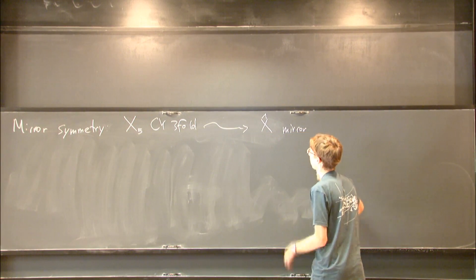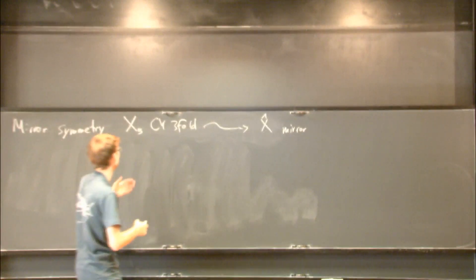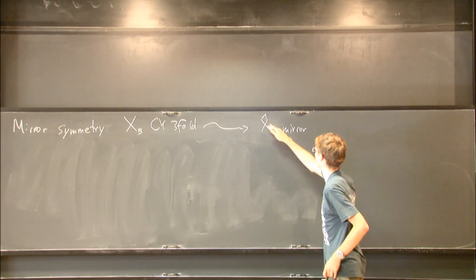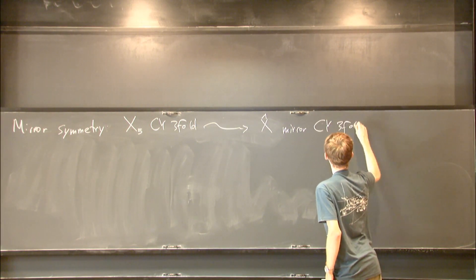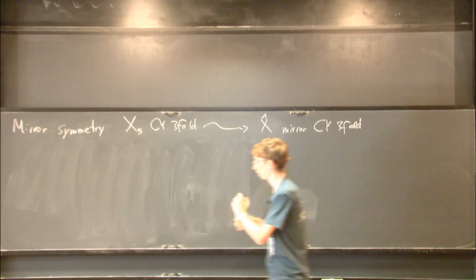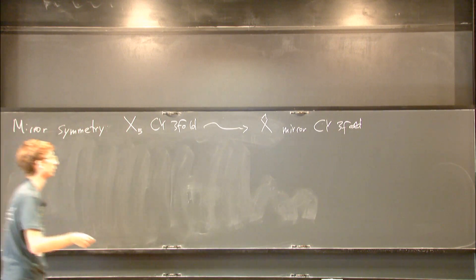Such that some aspects of the geometry of the quintic should be related to different aspects of the geometry of the mirror. In our case, mirror symmetry will relate the Gromov-Witten invariants of the quintic to something people can compute on the mirror side.